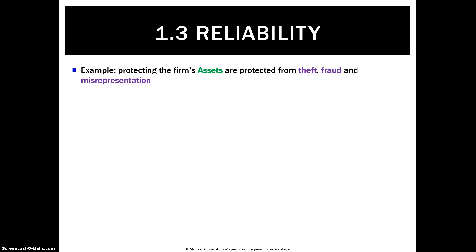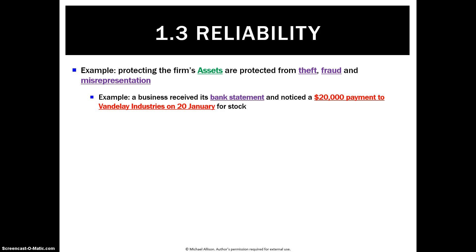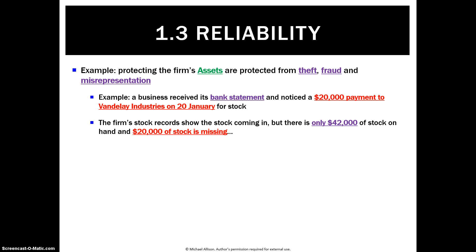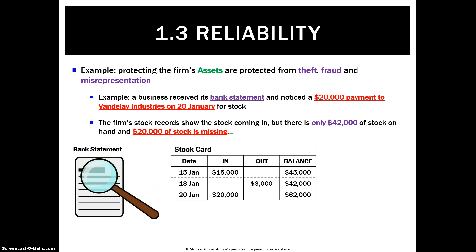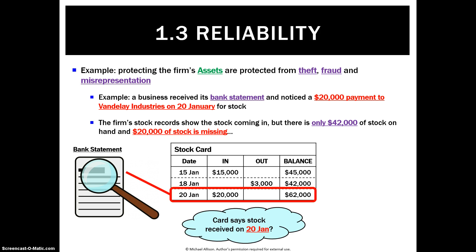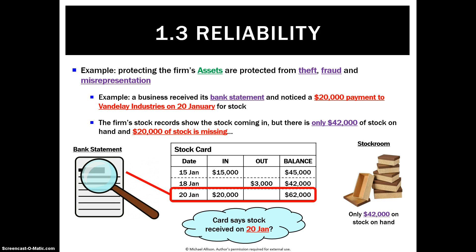Another thing we want to look at with internal control is making sure our assets are protected from theft, fraud and misrepresentation. Using an example: let's say we got our bank statement and it says there's a $20,000 payment to Vandelay Industries on the 20th of January for stock. However, we go and count our stock and there's only $42,000 on hand — $20,000 is missing. Looking at our stock card, on the 20th of January we bought $20,000 of stock, so we should have a balance of $62,000, but there's only $42,000 in the stock room.